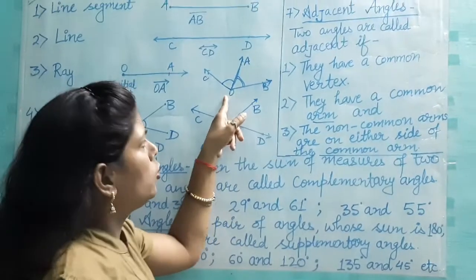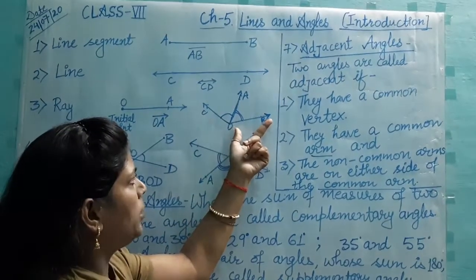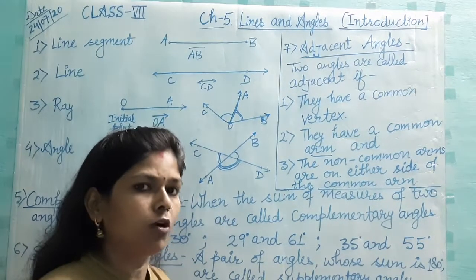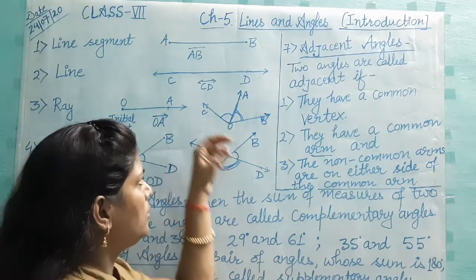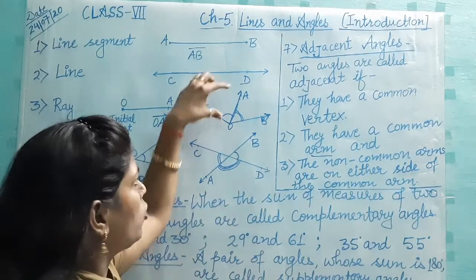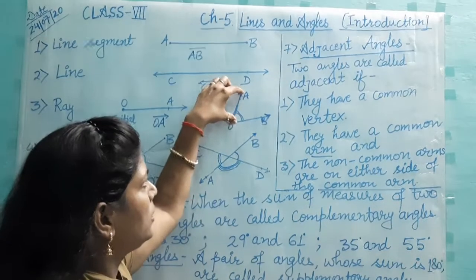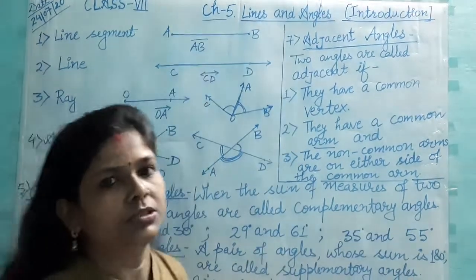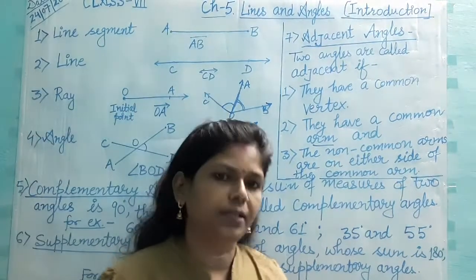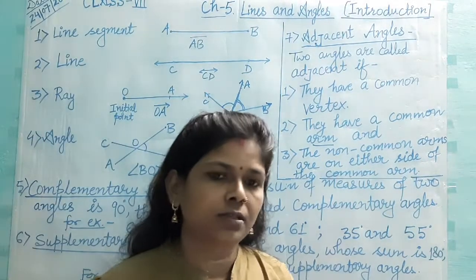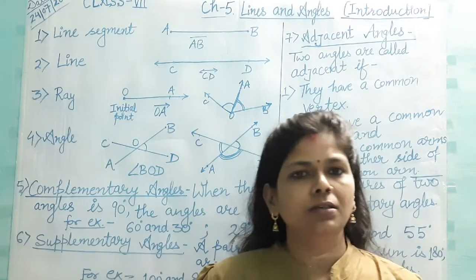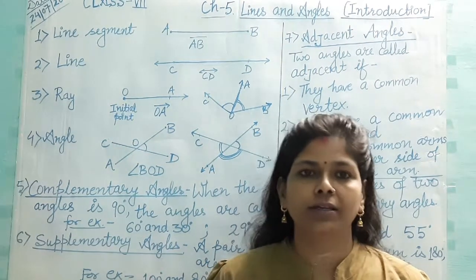The non-common arms OB and OC are on either side of the common arm. So these angles are called adjacent angles. We will continue this chapter in the next video. Okay, bye-bye.